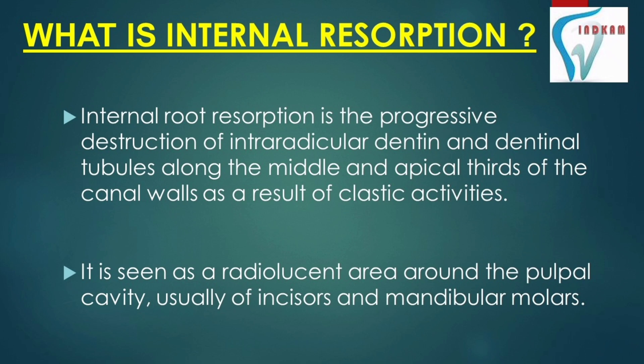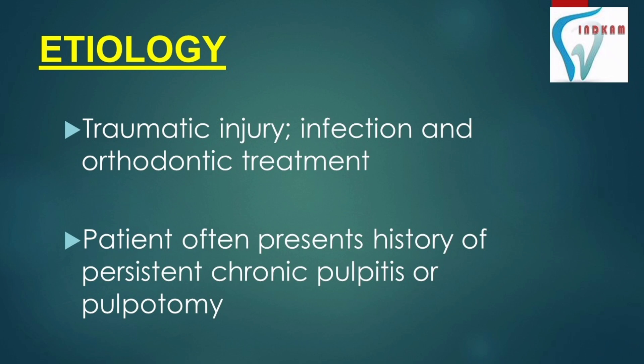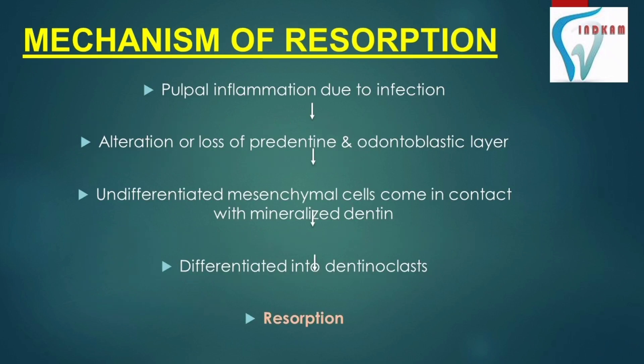It is seen as a radiolucent area around the pulp cavity, usually of incisors and mandibular molars. Coming to the etiology, traumatic injury, infection, and orthodontic treatment are the main reasons. The patient often presents with a history of persistent chronic pulpitis or pulpotomy.